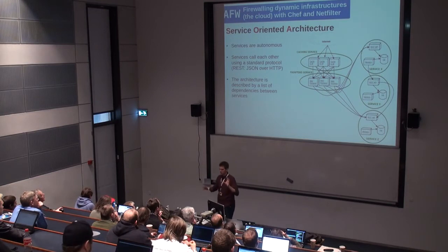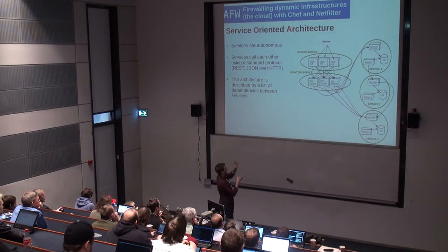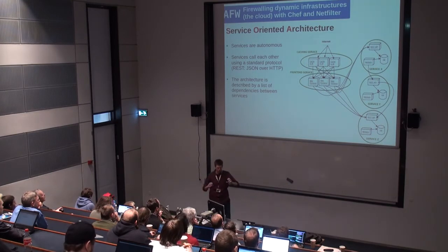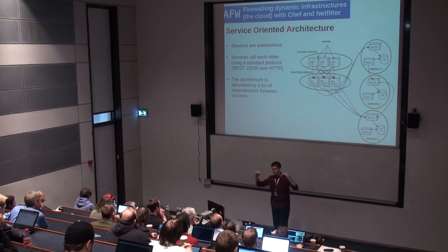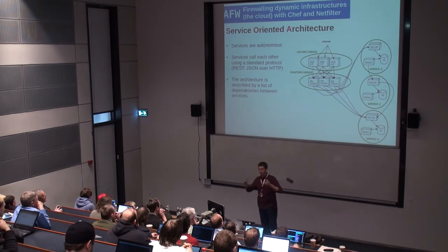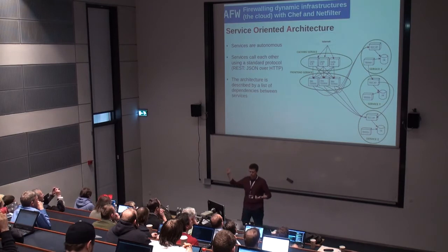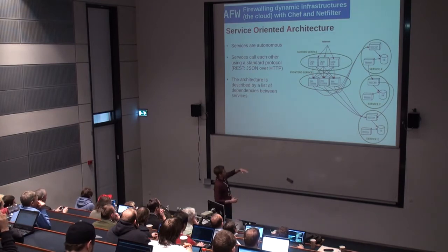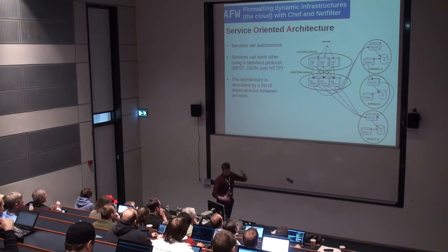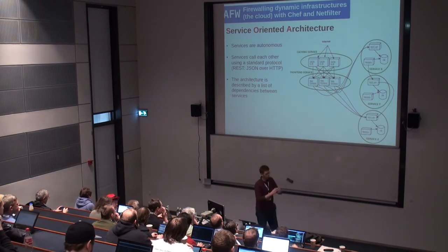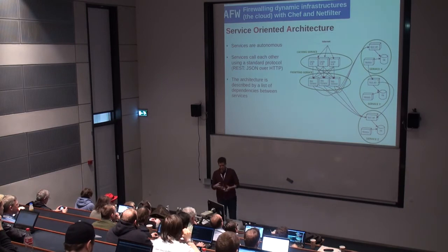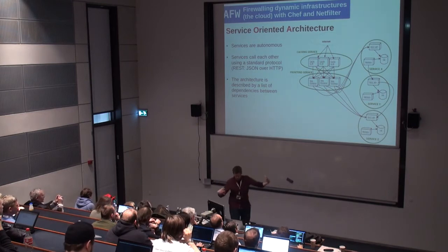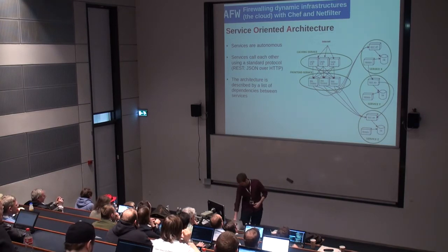That's where we started talking about service-oriented architecture. Developers — not security people — started working on that, because the code became so massive they wanted to decouple things and build layers of services. In a typical environment, you'll have a caching layer at the top, then front-end services — Apache with PHP, Node.js, whatever — and in the back-end multiple services that are REST APIs. Instead of one monolithic application, it's broken into smaller services. Those services are easier to manage: you can identify where they are in the network, what servers are running them, and treat them as independent entities from a security point of view.